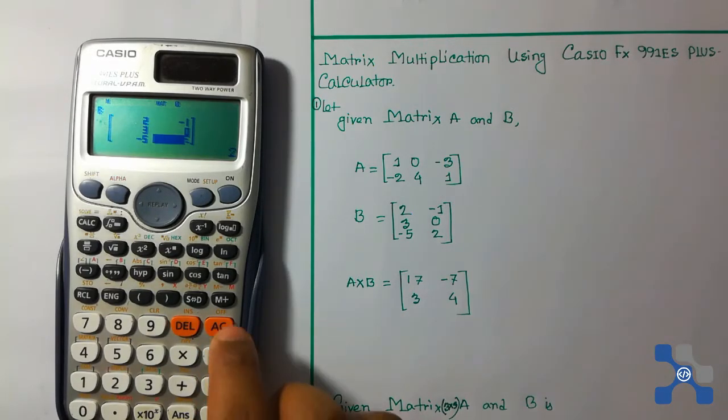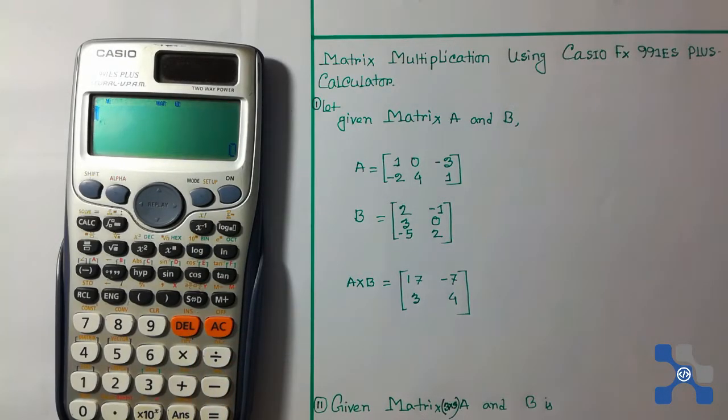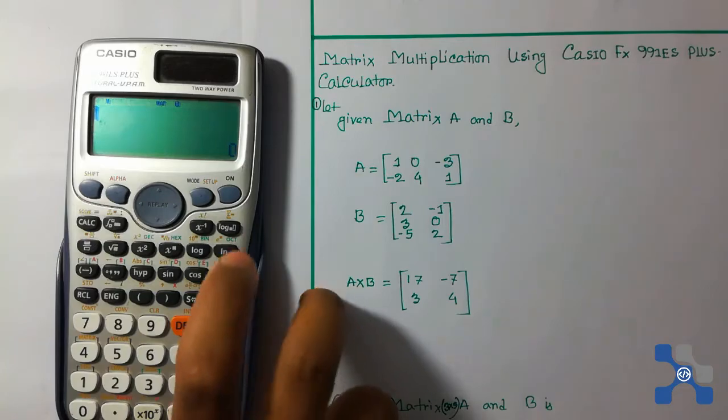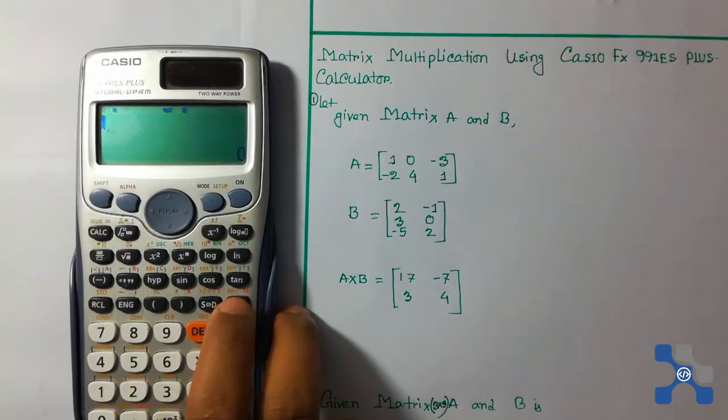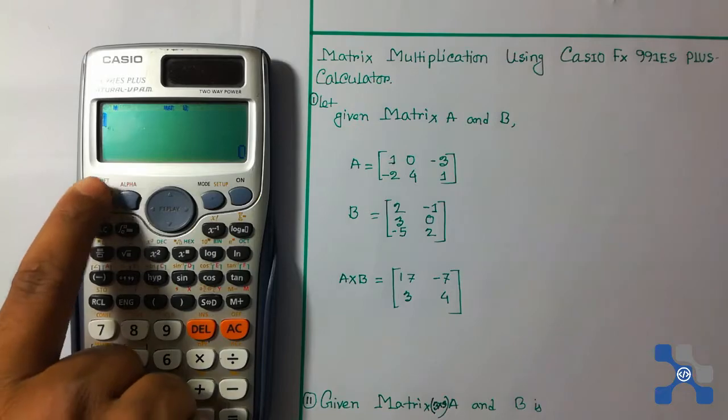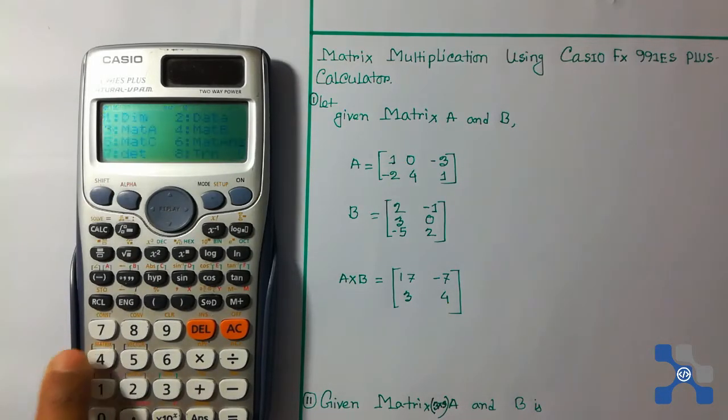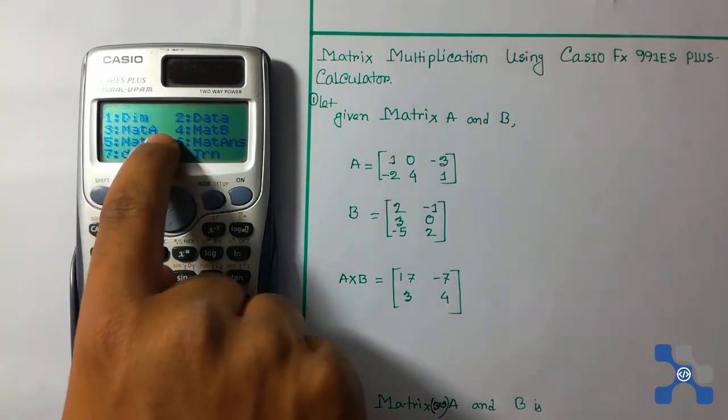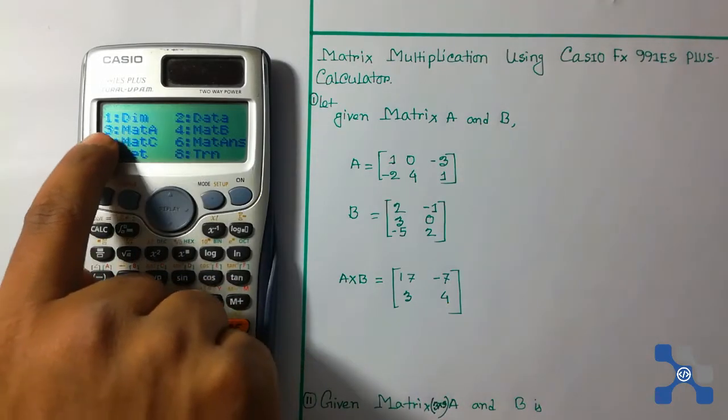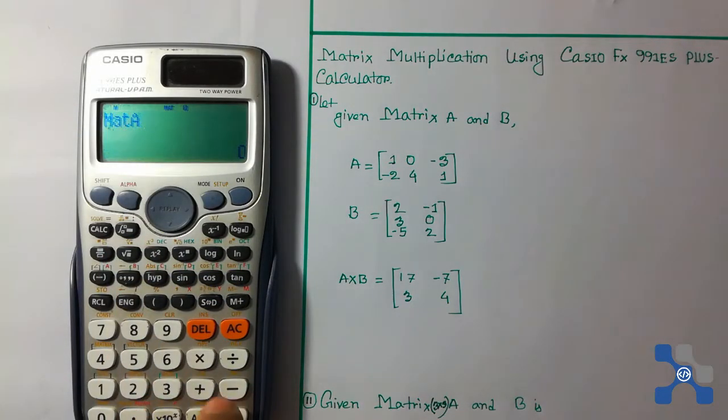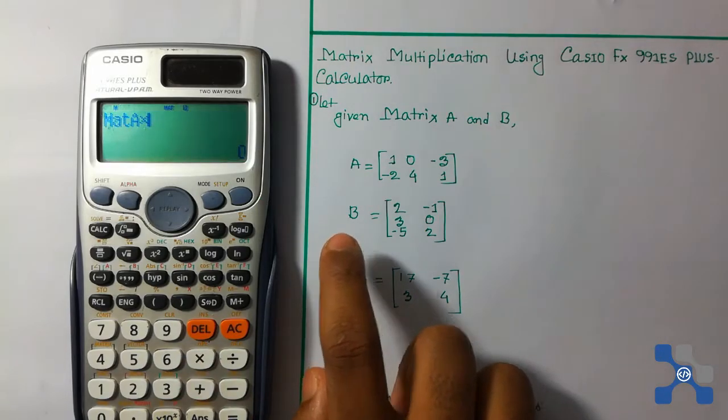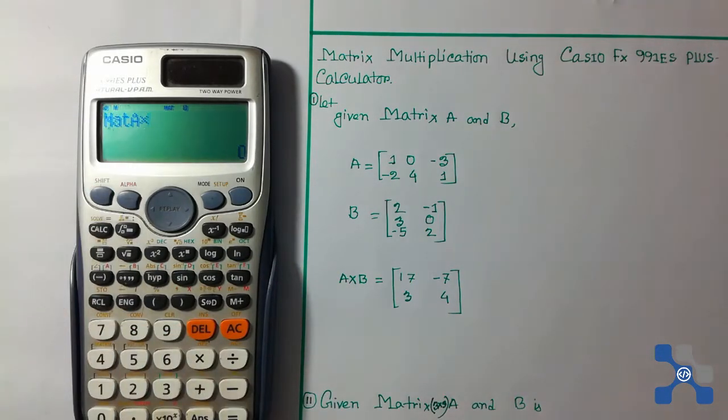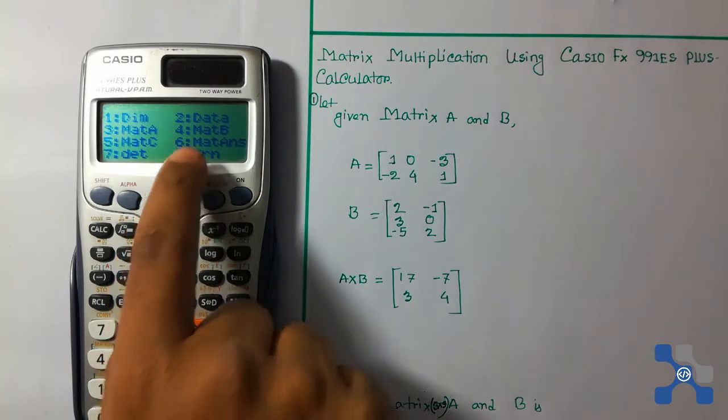Press 2. Now we're going to perform the multiplication operation. Press the shift button, press 4, and select matrix A. Press 3 and press the multiplication button. Again press the shift button, press 4, and select mat B.